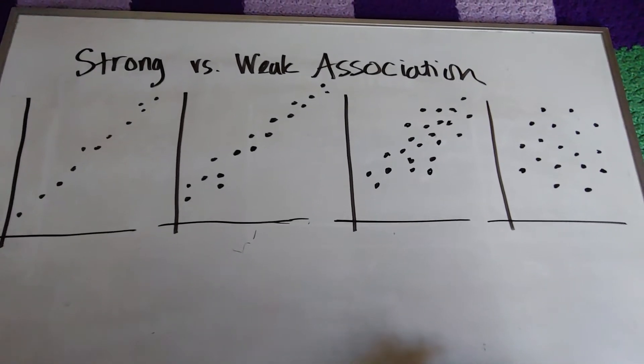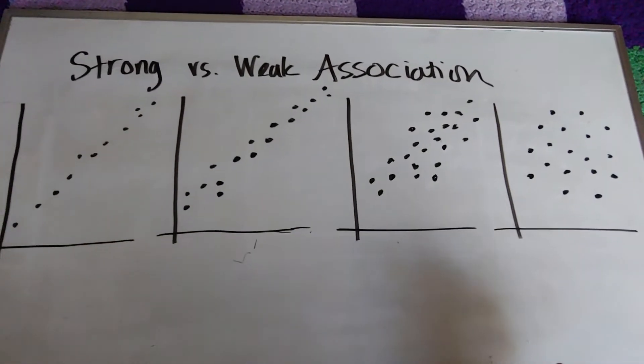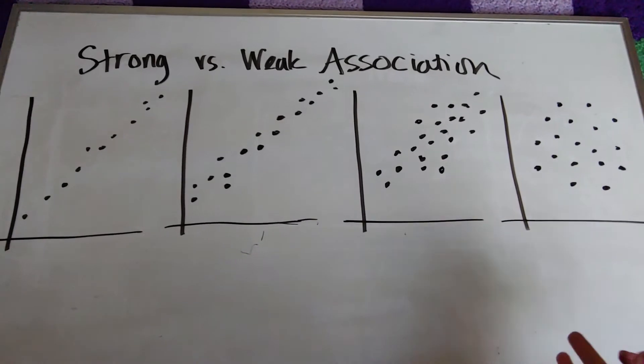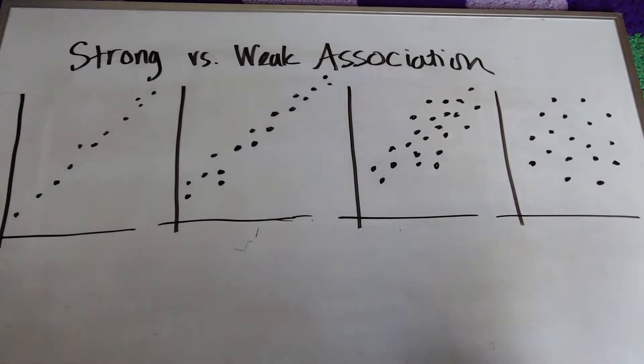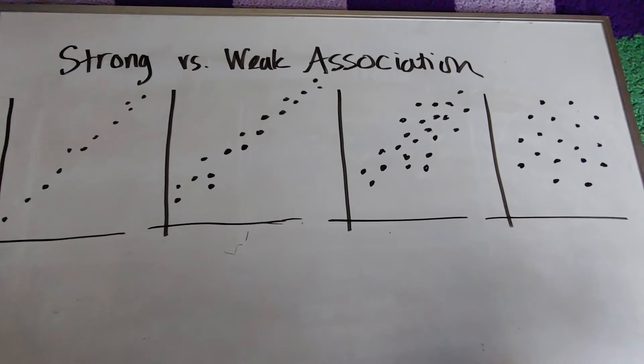So association basically means does it look like a line. The more it looks like a line, it's strong. As it gets further away from looking a lot like a line, it's called weak.